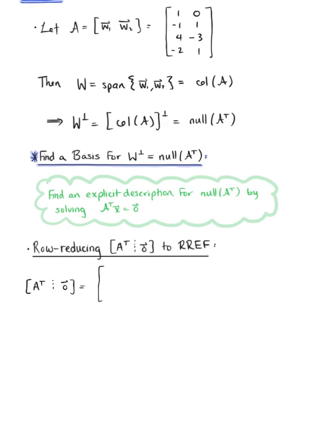So interchanging the rows and columns of matrix A, the first row of A transpose is 1, negative 1, 4, minus 2, and the second row is 0, 1, minus 3, 1.